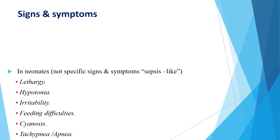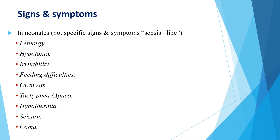Regarding signs and symptoms of hypoglycemia in neonates, the signs and symptoms are not specific. They look like sepsis-like manifestations such as lethargy, hypotonia, irritability, feeding difficulties, tachypnea, hypothermia, seizure, and coma.